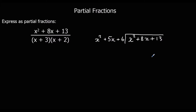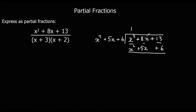So we're going to divide the numerator by the denominator. How many x squareds go into x squared? One. We multiply down by the 1: 1 times x squared is x squared, 1 times 5x is 5x, and 1 times 6 is 6. Taking away: x squared minus x squared is nothing, 8x minus 5x is 3x, and 13 minus 6 is 7. Since x squared doesn't go into 3x, we're finished.